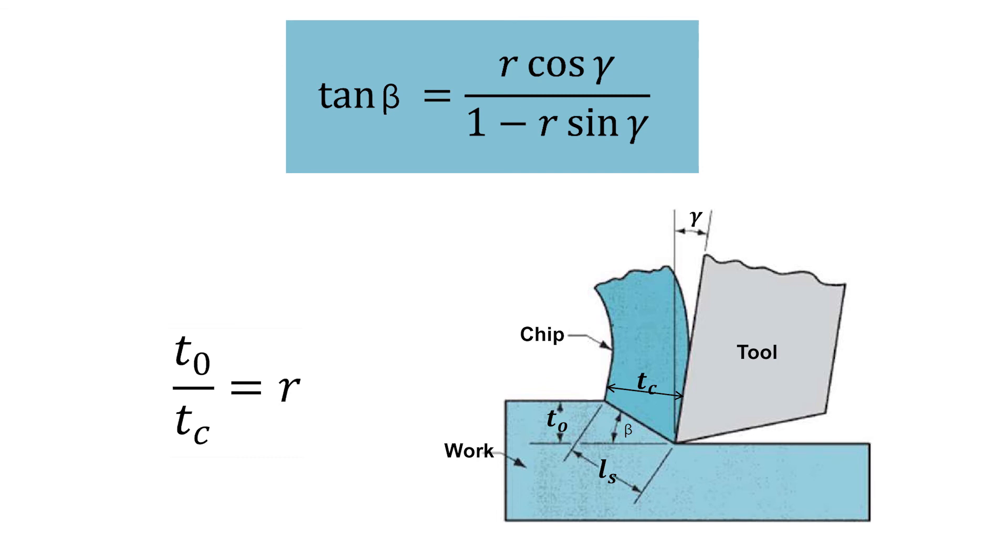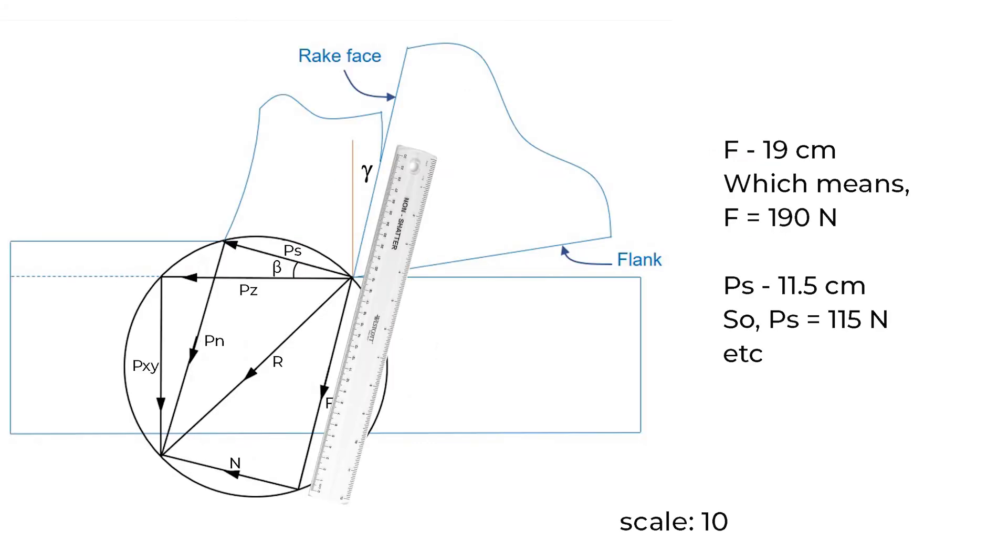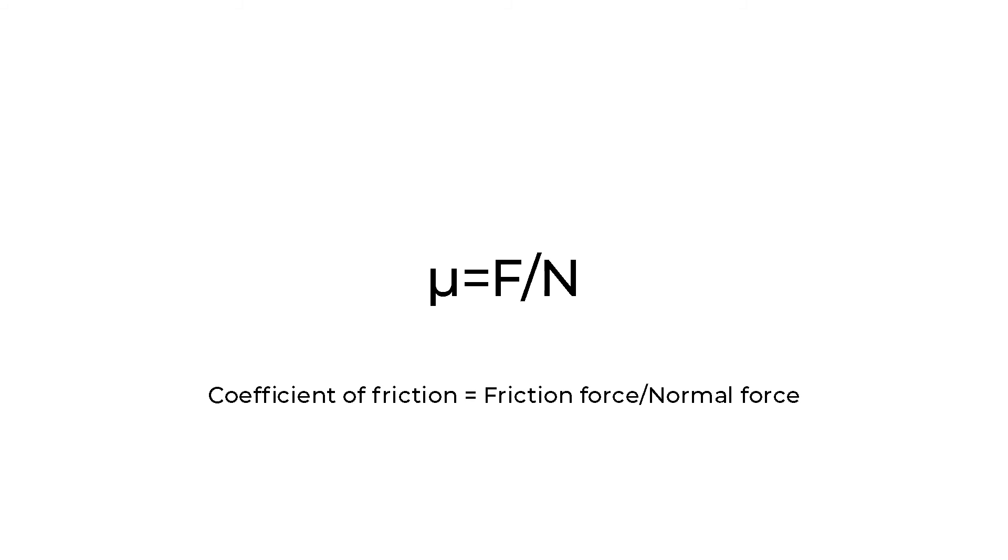Draw Ps at an angle beta to the horizontal and draw Pn normal to it. Since we have drawn Pz and Pxy using a scale before, we can multiply the lengths of other forces with that scaling factor and obtain the approximate values of those forces. The coefficient of friction is obtained by dividing the friction force F with the normal force N.